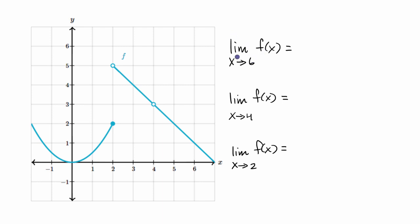First, let's think about what's the limit of f of x as x approaches six. As we approach six from the left-hand side, from values less than six, it looks like our f of x is approaching one. And as we approach x equals six from the right-hand side, it looks like our f of x is once again approaching one.